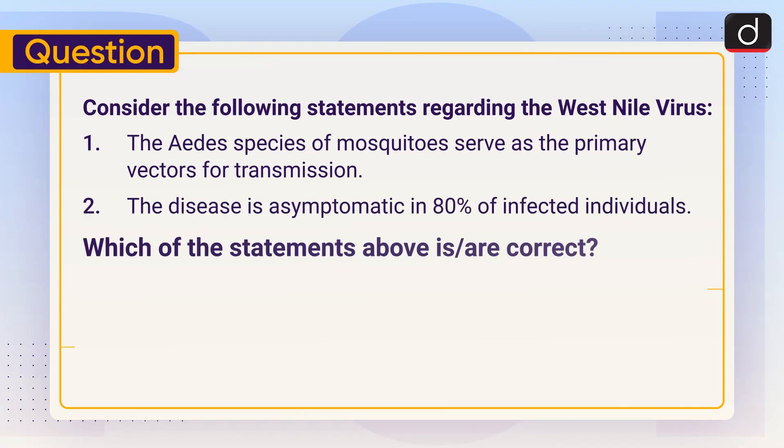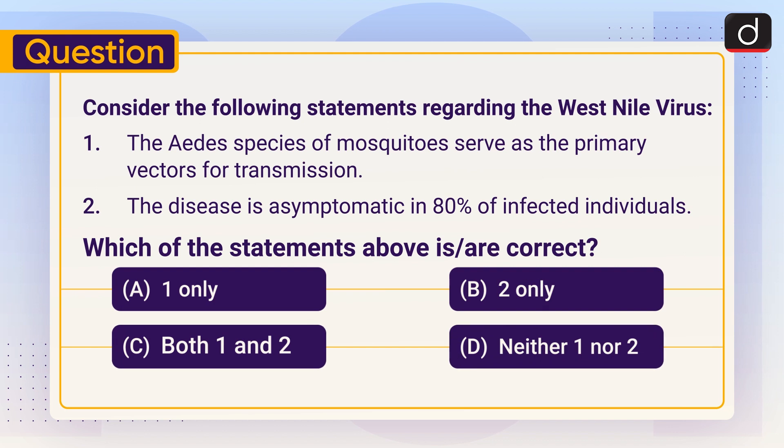Now it is time for a practice question. Consider the following statements regarding the West Nile Virus: One, the Aedes species of mosquitoes serve as the primary vectors for transmission. Two, the disease is asymptomatic in 80 percent of infected individuals. Which of the statements given above is or are correct — one only, two only, both one and two, or neither one nor two? Send the answer of this question in the comment section. Stay tuned for the next episode, thanks for watching.